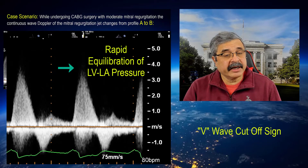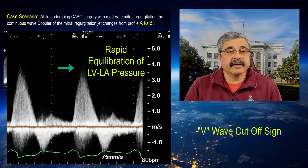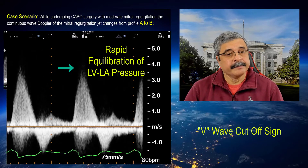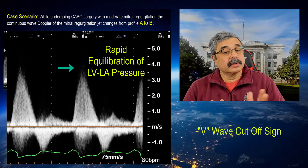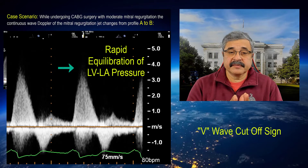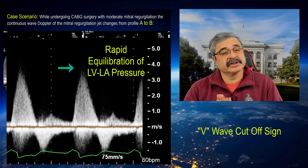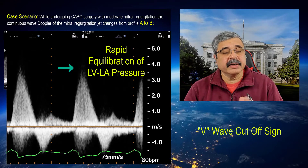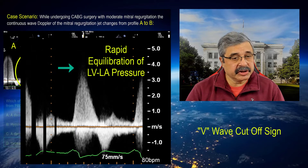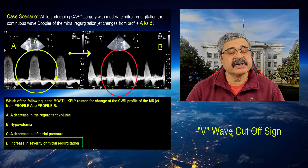that there is a rapid equilibration of pressure between the left ventricle and left atrium, and therefore further mitral regurgitation immediately stops. So while it looks like a smaller jet, the shape of the MR jet represents the manner and rapidity of the pressure equilibration between the left ventricle and left atrium. This patient has had an increase in the severity of MR,